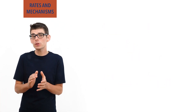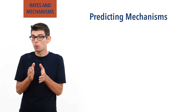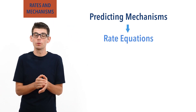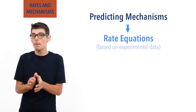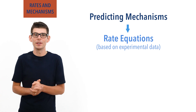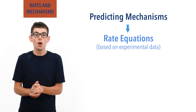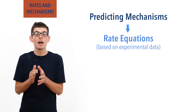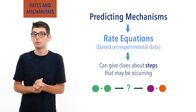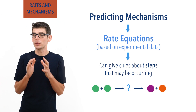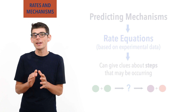One major source of information for predicting mechanisms comes from reaction rate data, and more specifically the rate equation for a given reaction. Rate equations are based on experimental data, meaning they aren't based on predictions or theory. So if we study a rate equation for a reaction carefully, we can often find information and clues about the steps occurring in the reaction. The biggest clue we can obtain from such data is information about the slowest step that happens in a reaction — we call this the rate determining step.